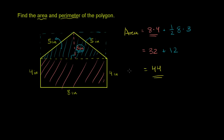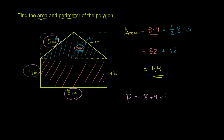Now let's do the perimeter. The perimeter — we just have to figure out the sum of the sides, like how long a fence would we have to build to go around the shape. So the perimeter is going to be equal to 8 plus 4 plus 5 plus this 5, plus this 4 right over here. So 8 plus 4 is 12, 12 plus 5 is 17, 17 plus 5 is 22, 22 plus 4 is 26.